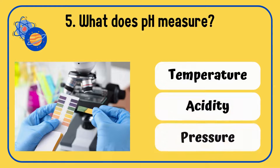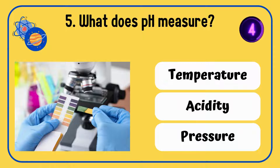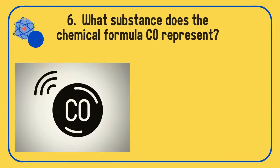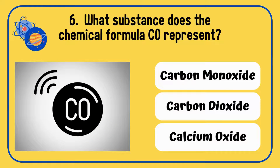What does pH measure — is it temperature, acidity, or pressure? The answer is acidity. What substance does the chemical formula CO represent — carbon monoxide, carbon dioxide, or calcium oxide?